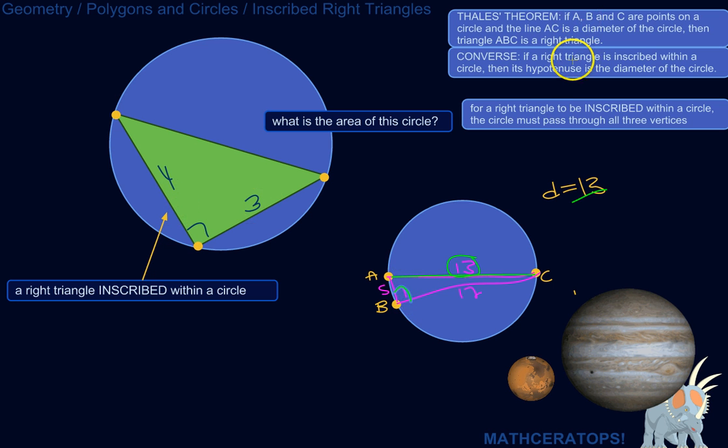Conversely, if a right triangle is inscribed within a circle, then its hypotenuse is the diameter of the circle. So it just goes the other way. Here we've got a right triangle inscribed within a circle, meaning the circle passes through all three of its vertices.